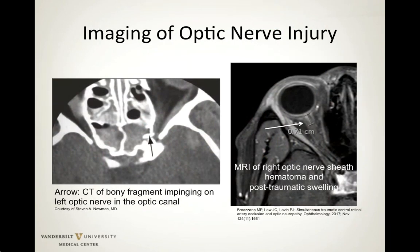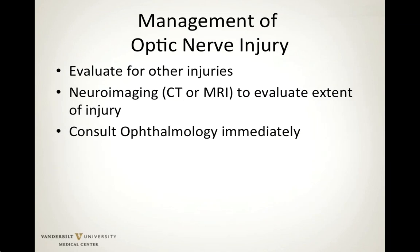Neuroimaging is needed to delineate the extent of injury to the optic nerve and nerve sheath, especially when the mechanism of vision loss is unclear. A CT scan can show a bony fragment impinging on the left optic nerve in the optic canal causing vision loss — in such cases, surgery to release the bony fragment can improve vision. An MRI can demonstrate an optic nerve sheath hematoma and post-traumatic swelling causing vision loss.